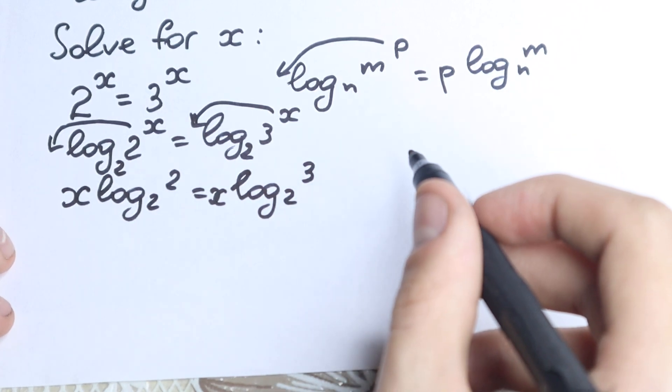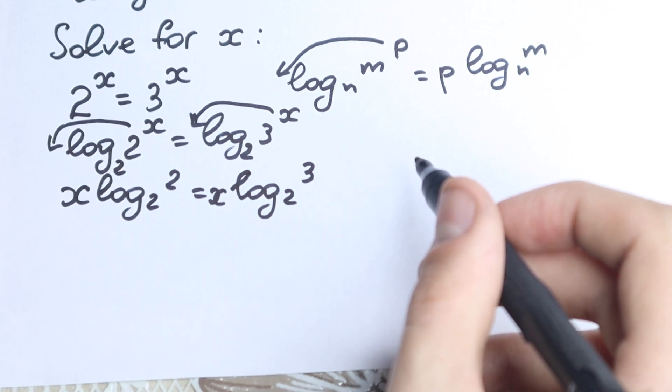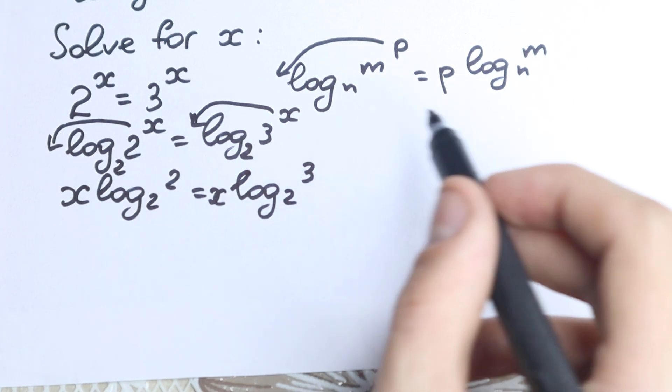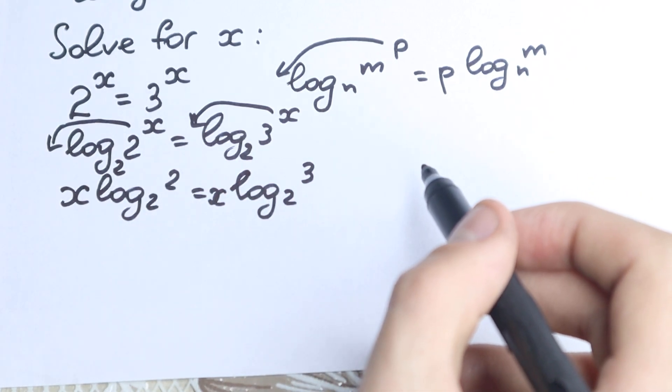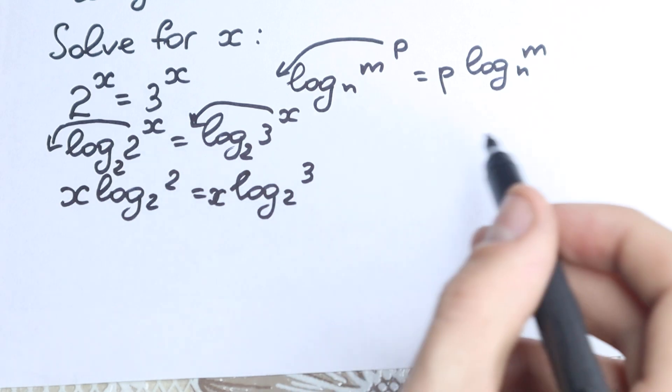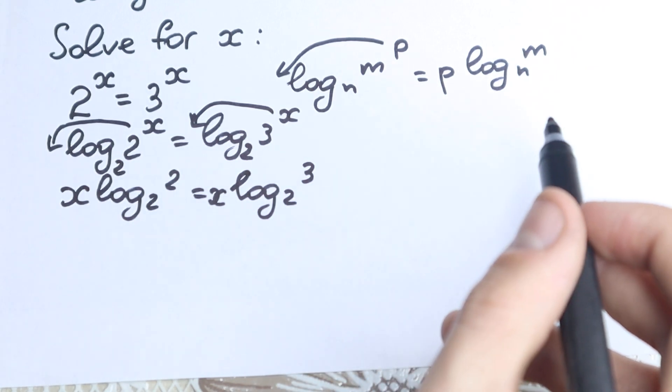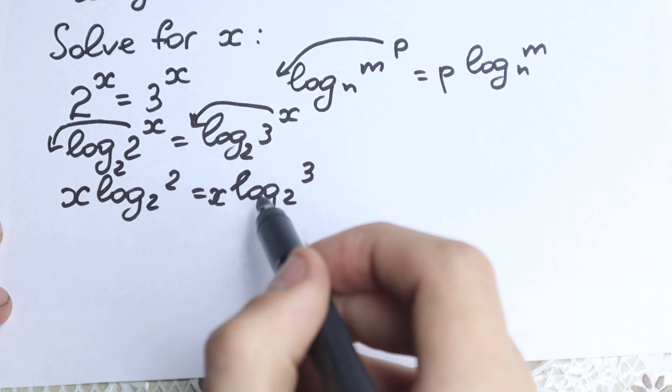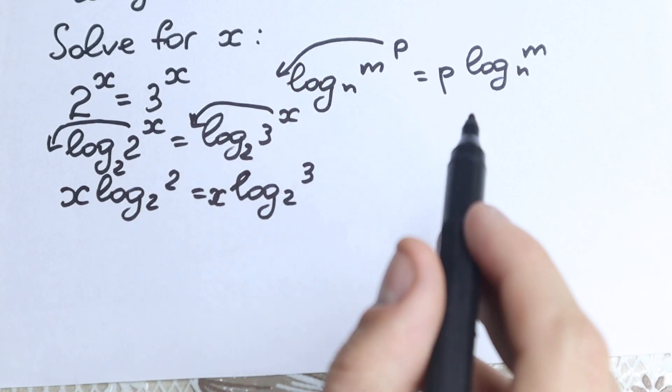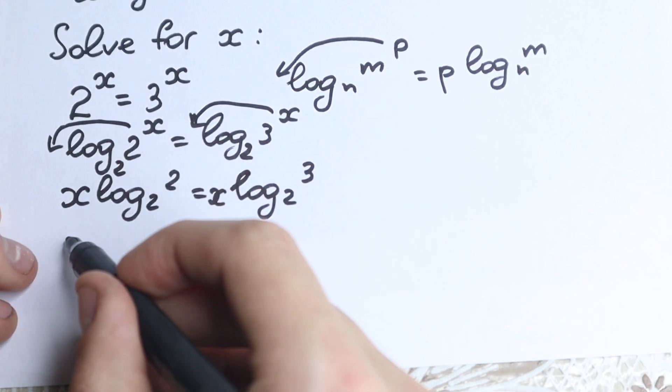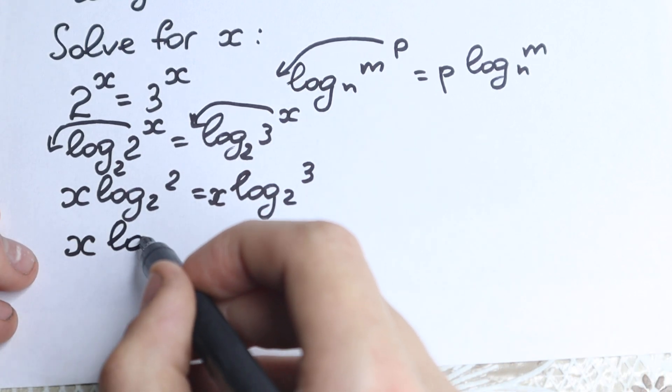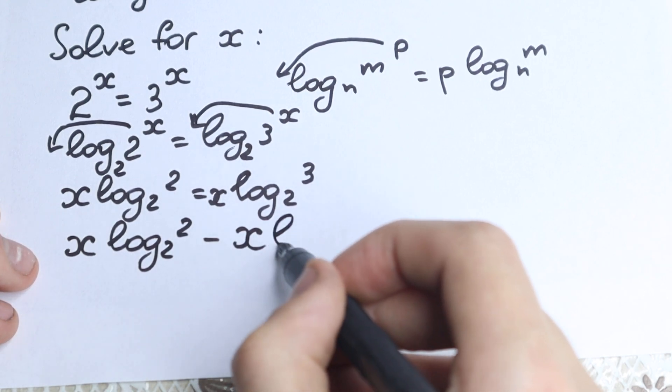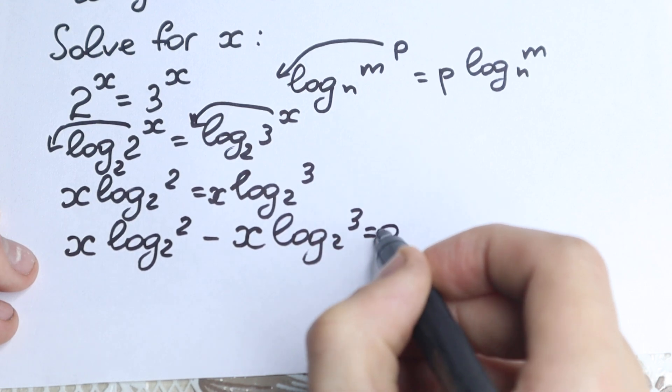What we're going to do next? You should know a great rule: every time you have an equation, you should group your x's on the left hand side and your constants on the right hand side. But right here we have x with a constant on both sides. So let's group everything on the left. We have x times log base 2 of 2 minus x log base 2 of 3 equals 0.